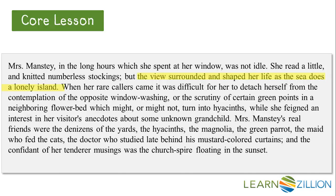Let's continue. 'When her rare callers came, it was difficult for her to detach herself from the contemplation of the opposite window-washing or the scrutiny of certain green points in a neighboring flower-bed, which might or might not turn into hyacinths, when she feigned an interest in her visitor's anecdotes about some unknown grandchild. Mrs. Manstey's real friends were the Denzins of the yard, the hyacinths, the magnolia, the green parrot, the maid who fed the cats, the doctor who studied late behind the mustard-colored curtains, and the confidant in her tenderer musings was the church spire floating in the sunset.' This entire last sentence talks about what she sees outside — the flowers, trees, birds, people, and buildings. Wharton doesn't just explain what Mrs. Manstey sees when she looks outside; Wharton goes a step further and says that these people and things are her friends. This definitely gives us insight into Mrs. Manstey's character.